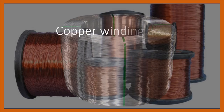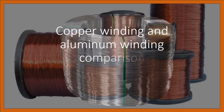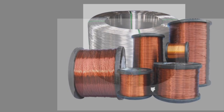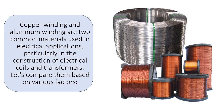Copper winding and aluminum winding comparison. Copper winding and aluminum winding are two common materials used in electrical applications, particularly in the construction of electrical coils and transformers. Let's compare them based on various factors.